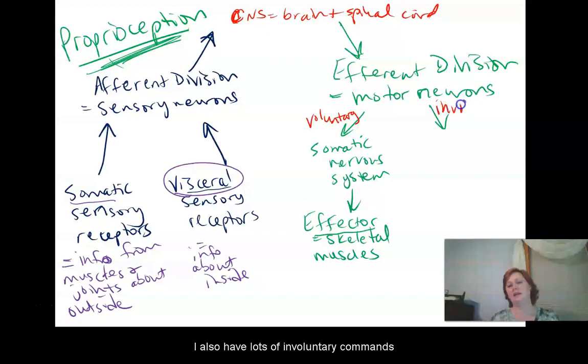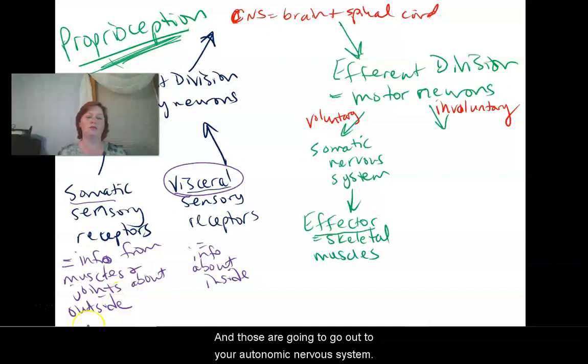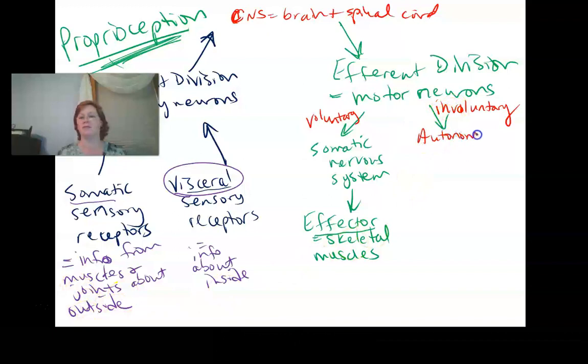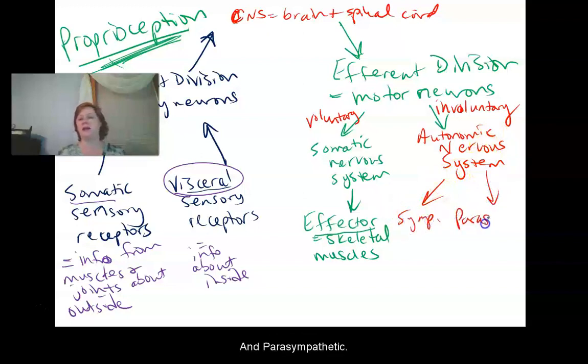But I also have lots of involuntary commands that go out, and those are going to go out to your autonomic nervous system. Now your autonomic nervous system, your ANS, you can think of it as being automatic. So the autonomic is automatic. It can be subdivided into two divisions, the sympathetic and the parasympathetic.